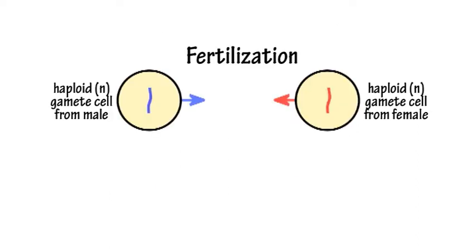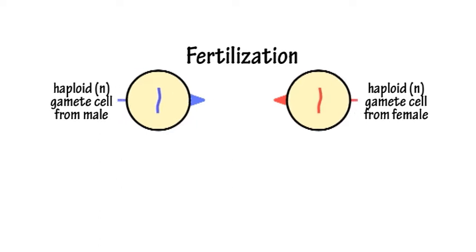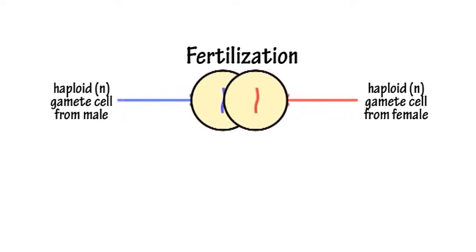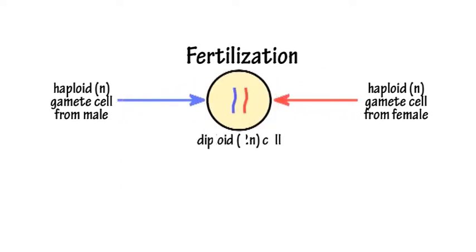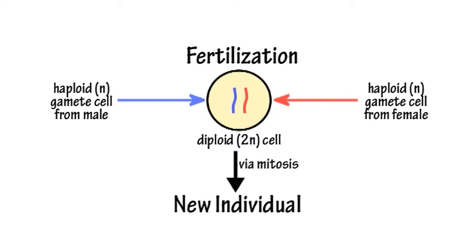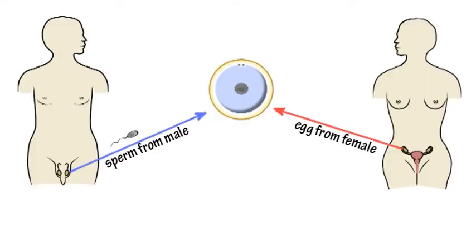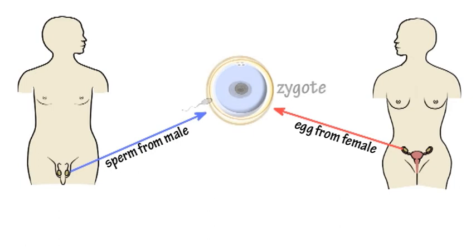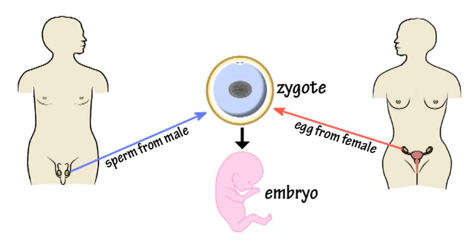In the process of fertilization, a haploid gamete cell from the male fuses with a haploid gamete cell from the female to form a diploid cell that goes on to develop into a new individual. In the case of humans, a sperm from the male fertilizes an egg in the female, resulting in a zygote that develops into a human embryo.